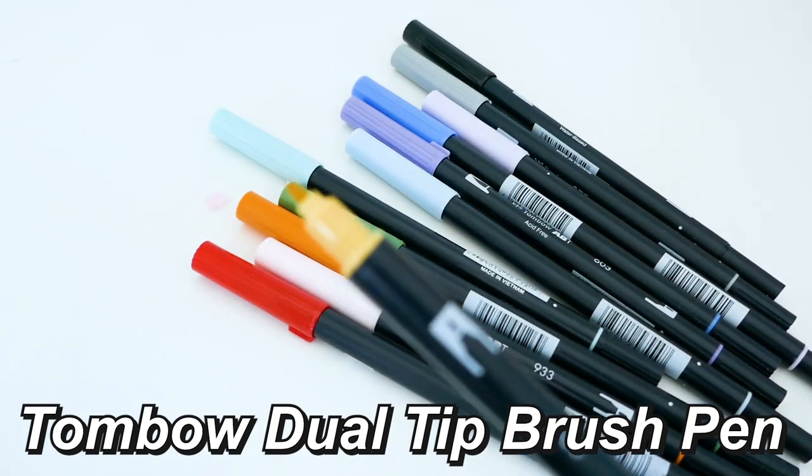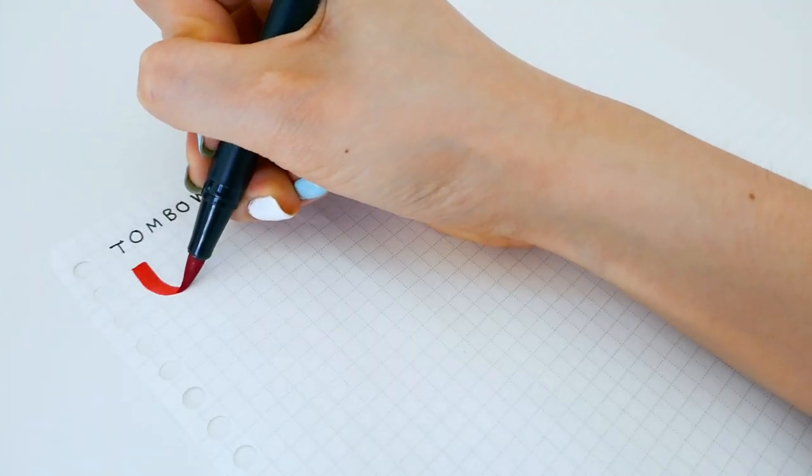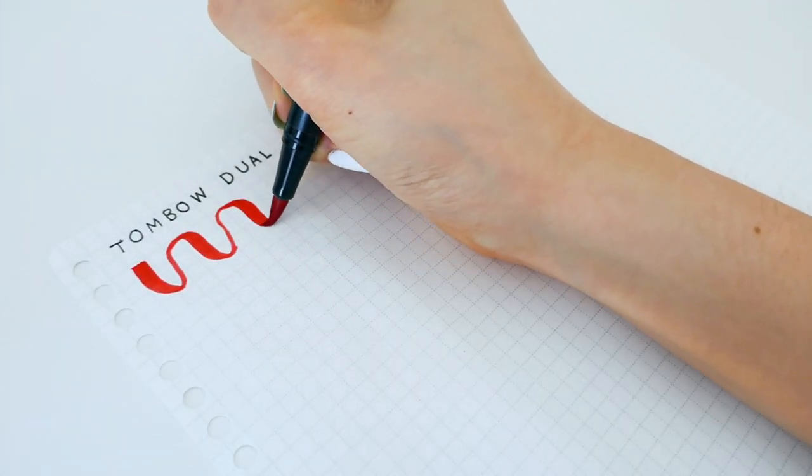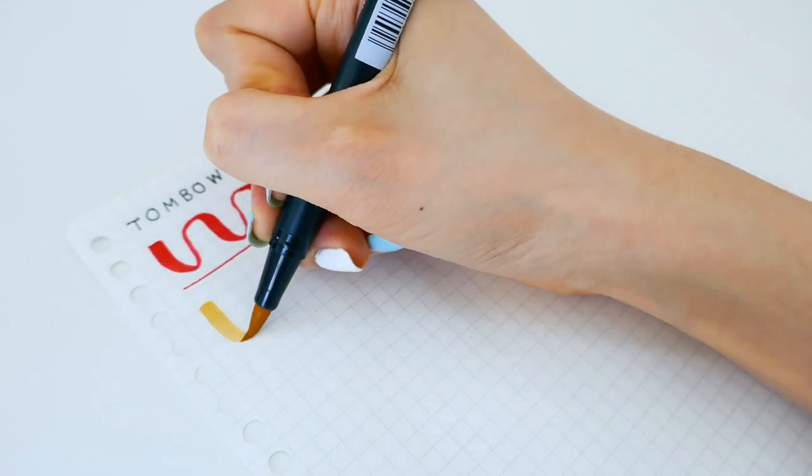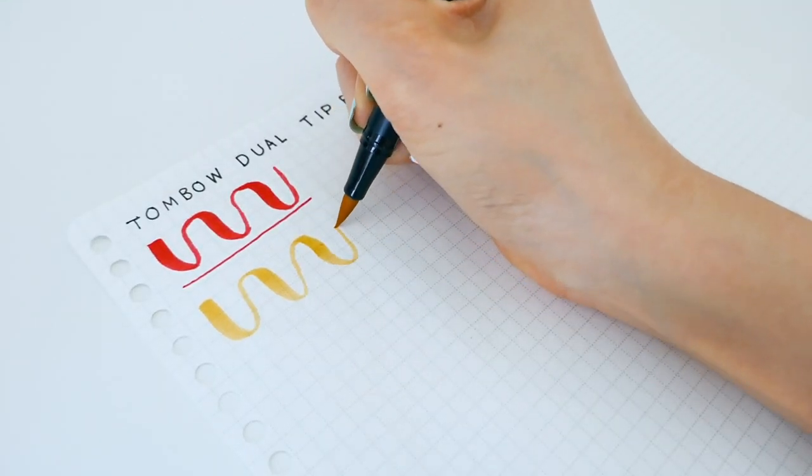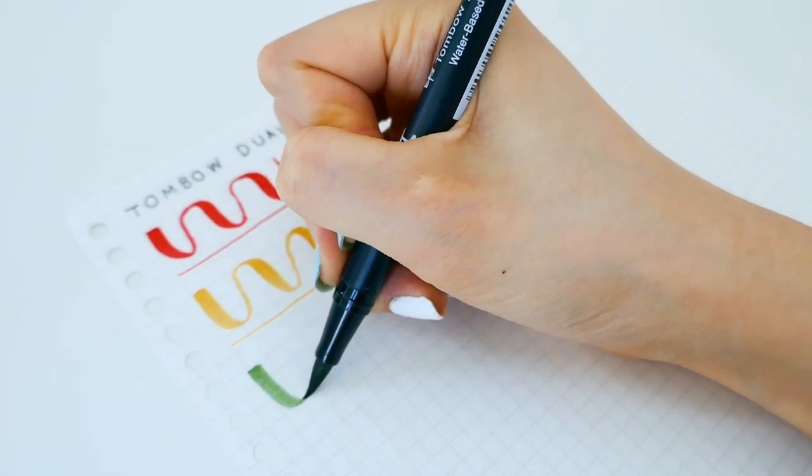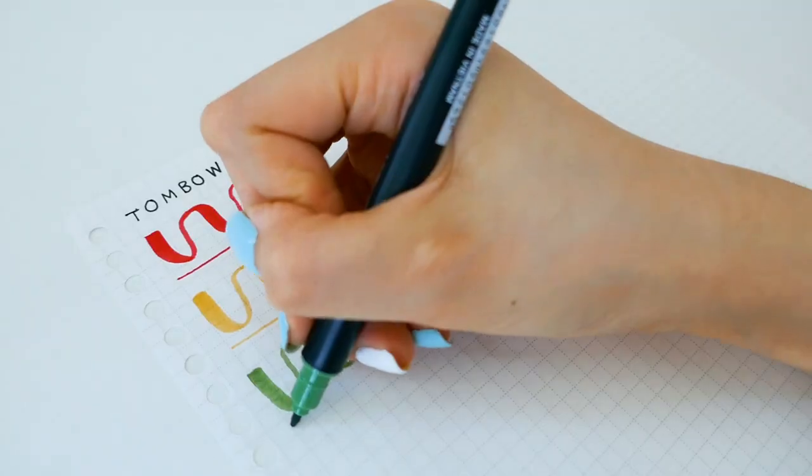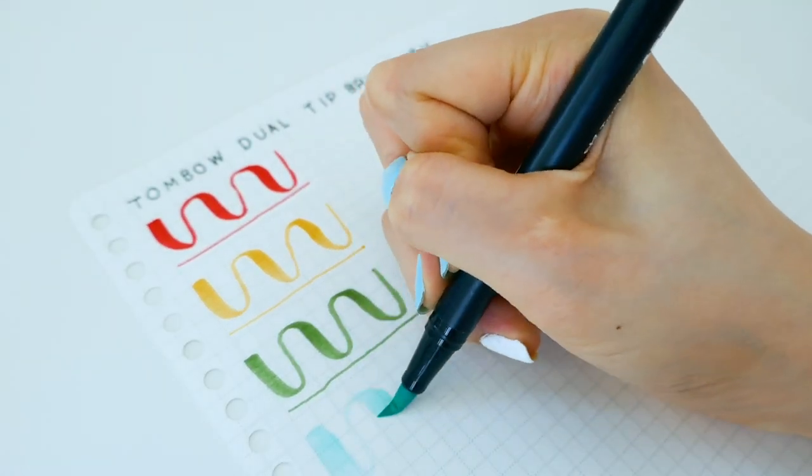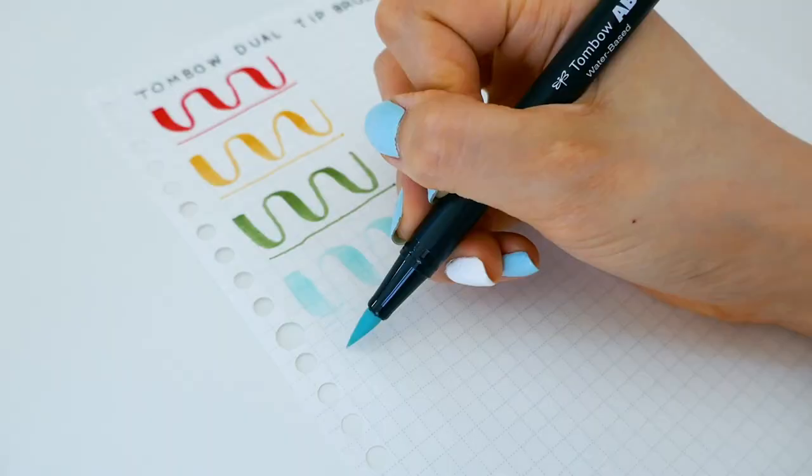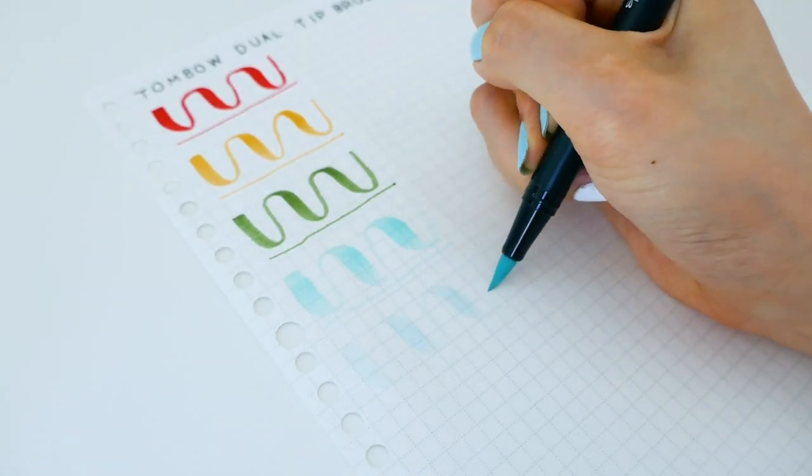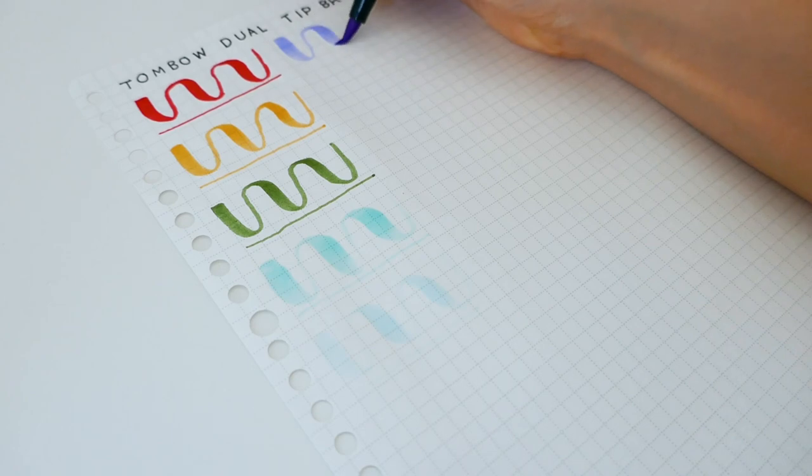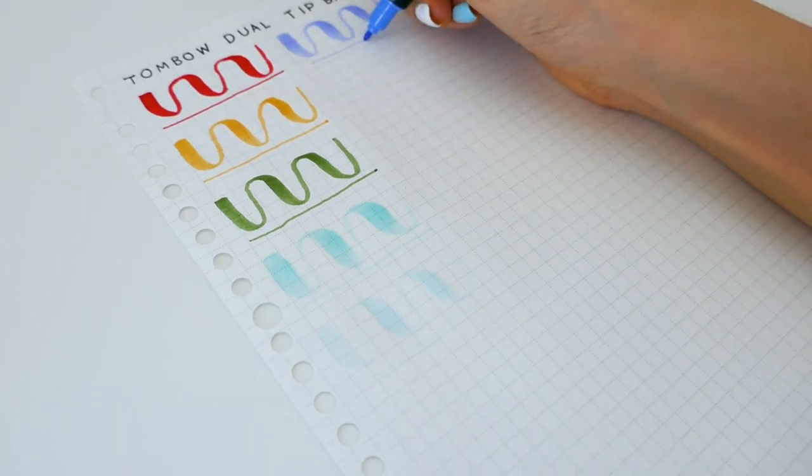First up here we have the Tombow Dual Brush Pens. I absolutely love these and I picked out a few colors that I specifically love, including this yellow. I find the Tombows are extremely useful for beginners as they were one of my first brush pens and helped me get into calligraphy. Not to mention they have, I think, over 200 colors which is pretty insane if you ask me.